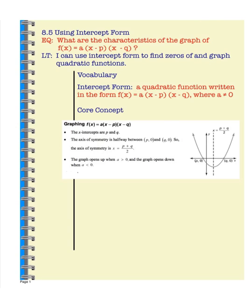Today we're going to learn how to graph quadratic functions using intercept form. Intercept form looks kind of like factored form. We're going to do this by finding the x-intercepts. Intercept form is a quadratic function written in the form f(x) = a(x - p)(x - q). a is the leading coefficient, and the x-intercepts are p and q.